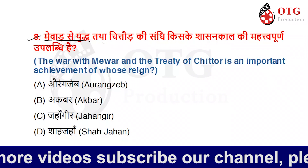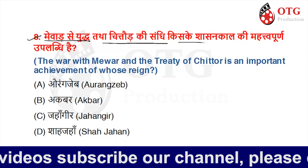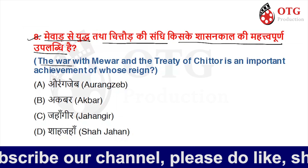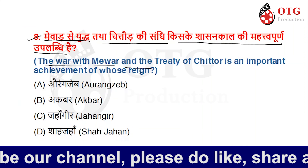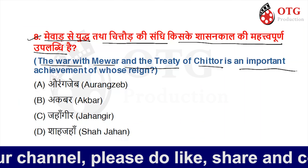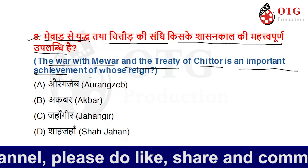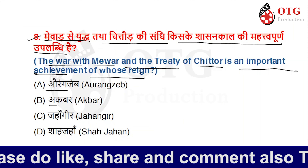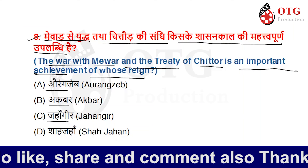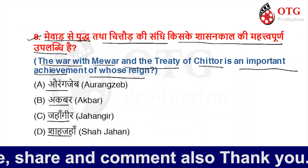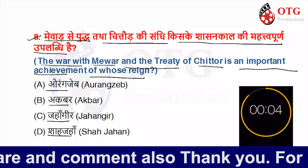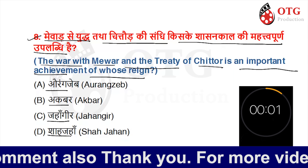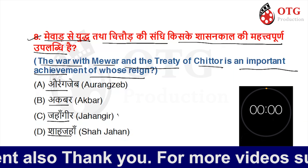The war with Mewar and the treaty of Chittor is an important achievement of whose reign? Option A is Aurangzeb, Option B is Akbar, Option C is Jahangir, and Option D is Shah Jahan. Your time starts now. The right answer is Jahangir.